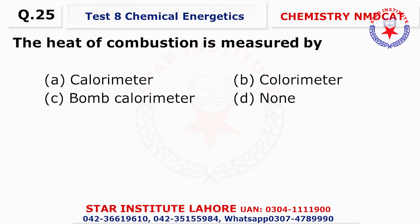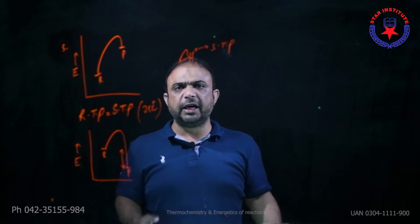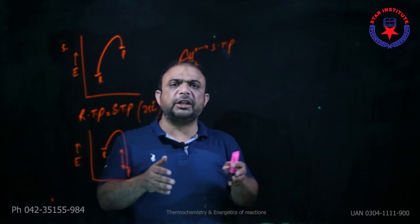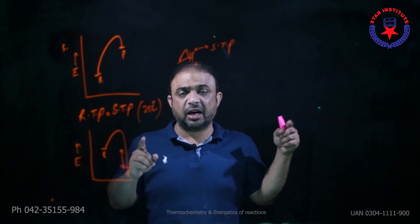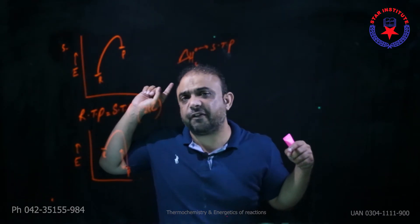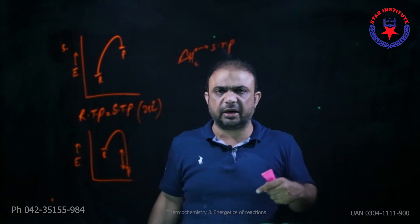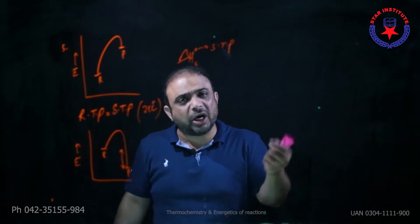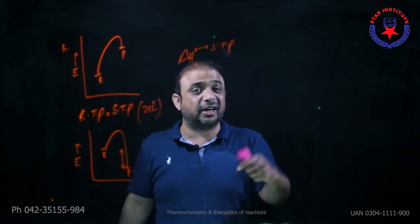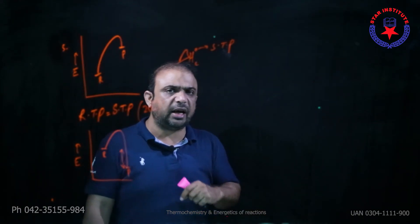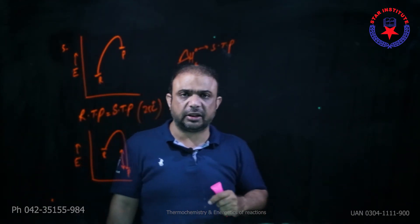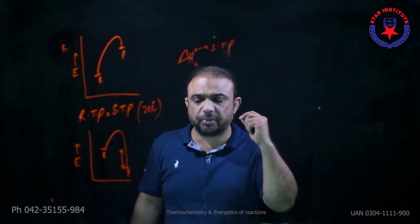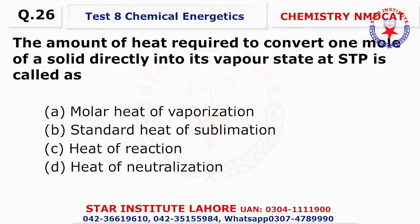Question number twenty-five: The heat of combustion is measured by a bomb calorimeter. Remember: if the question asks which instrument measures heat of reaction, the answer is ordinary calorimeter or glass calorimeter; if it asks which measures heat of combustion, the answer is bomb calorimeter.